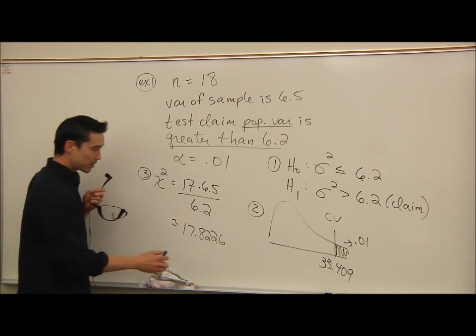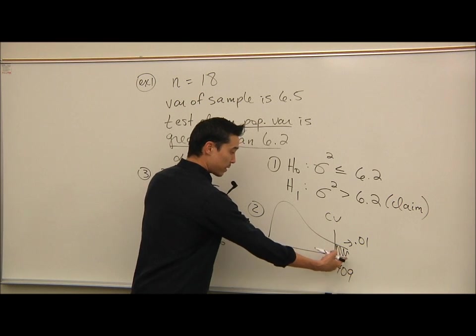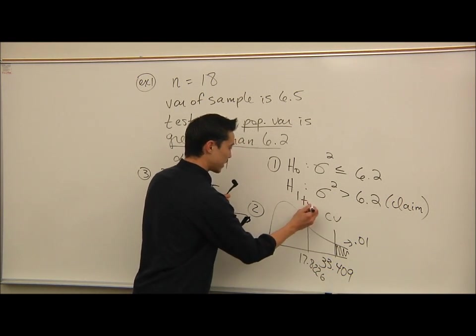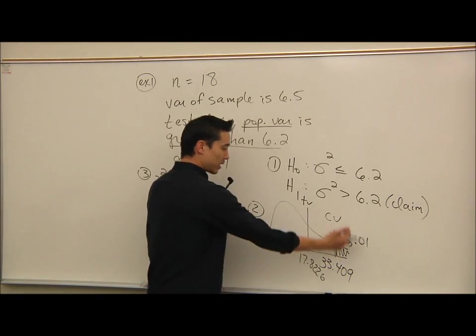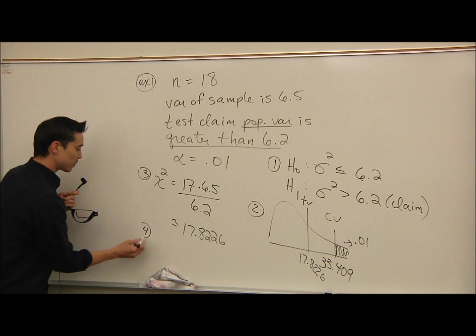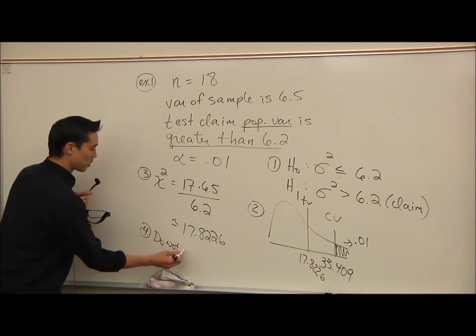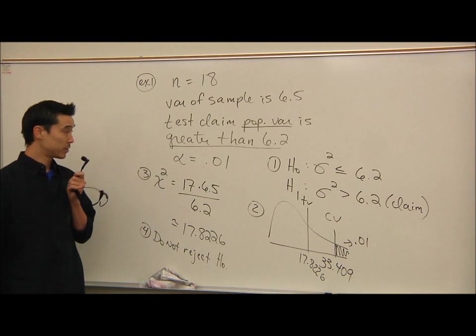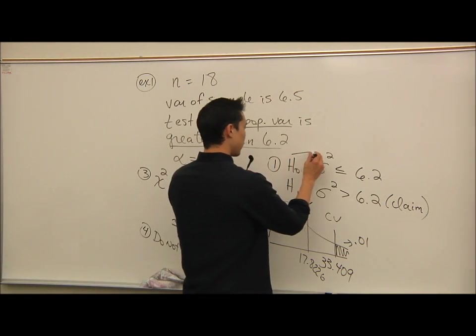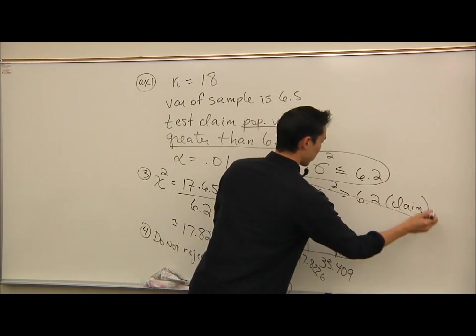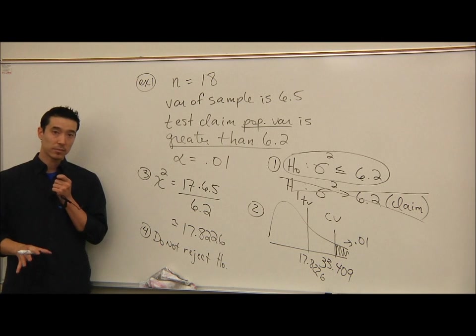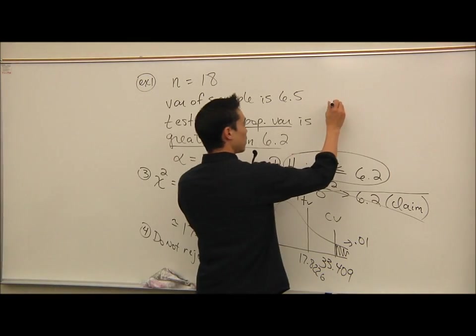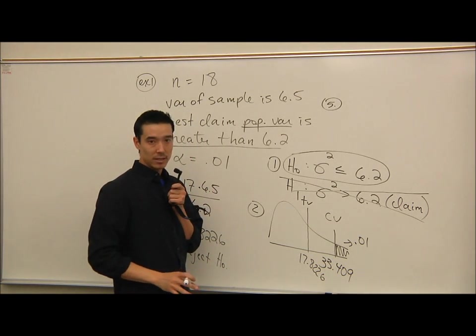I bring my test value over to this picture. It would need to be to the right of 33 to be in there, right? And 17, I don't know, maybe here or somewhere. And I'm going to label that as my test value. Since my test value is clearly not in my rejection region, then step 4, we do not reject H0. Remember, step 4 is always either reject H0 or do not reject H0. So in this case, we're not rejecting H0. So if I'm not rejecting H0, I'm going to circle it. And I'm going to cross the line through the other. The claim was that the population variance is bigger than 6.2. We don't have enough evidence to support that. So in my own words, step 5, we don't have enough evidence to support the claim that it's greater than 6.2.